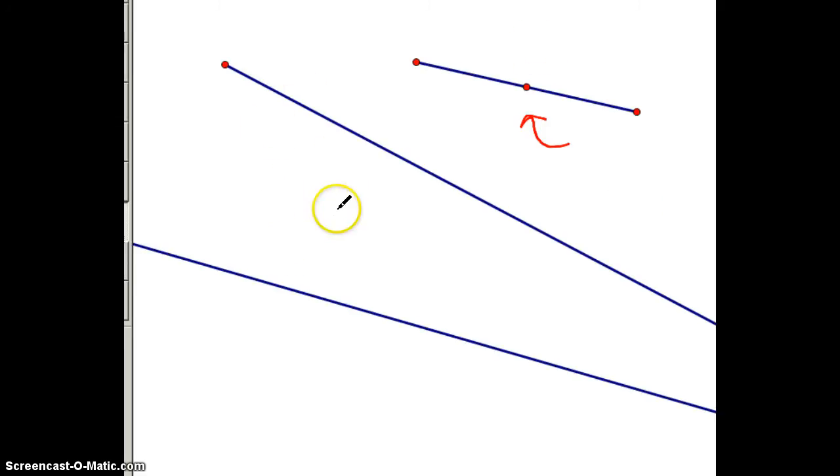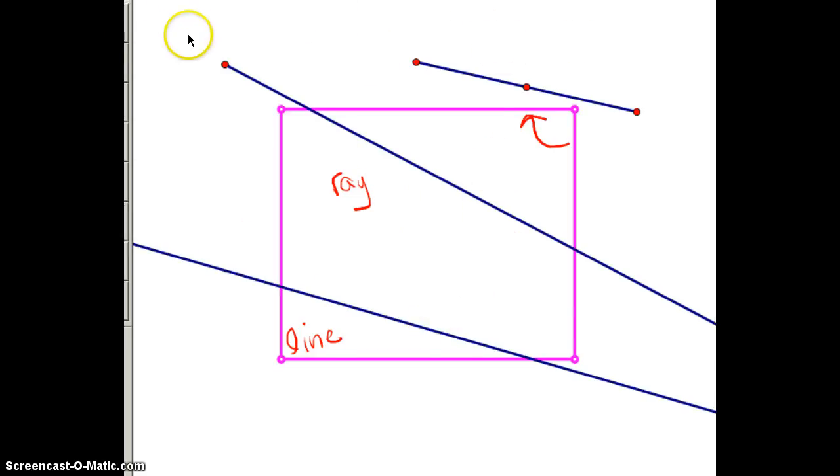Also, if you look down here at this ray and below at this line, you're not going to be able to find the midpoint of either one. There is no center of a line because it goes on forever and a ray goes on forever. So you're not going to be able to find a midpoint of either of those if asked.